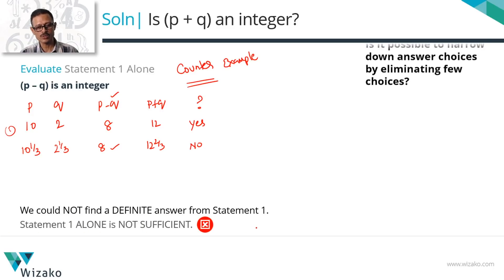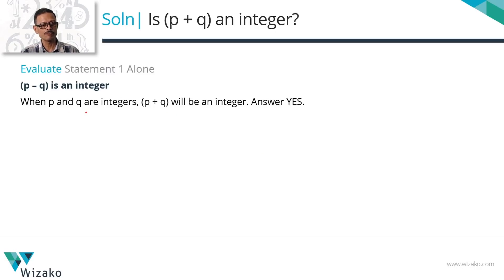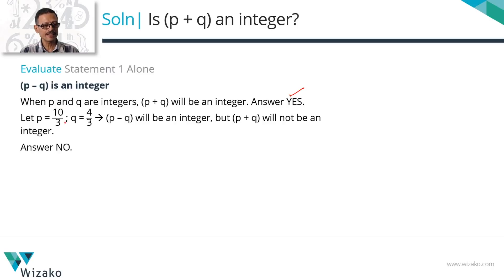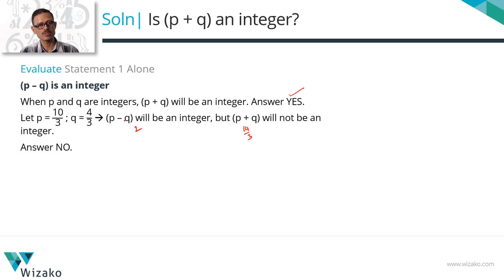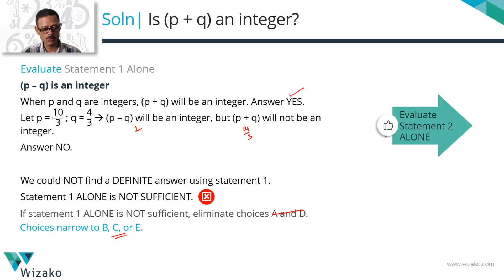For additional flavor, using p = 10/3, q = 4/3: p − q = 6/3 = 2, an integer; p + q = 14/3, not an integer. This further confirms statement 1 is not sufficient. Rule out A and D; answer choices are B, C, or E. Now evaluating statement 2 alone: p + 2q is an integer.